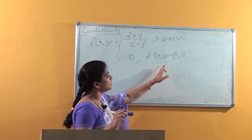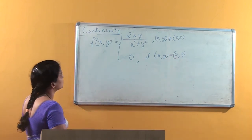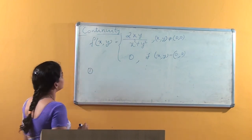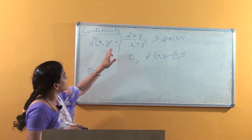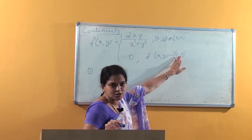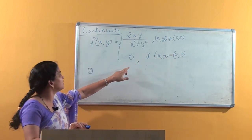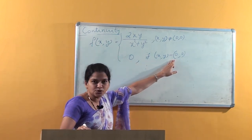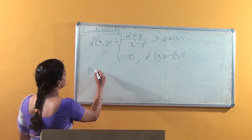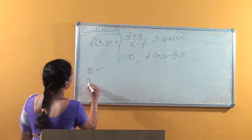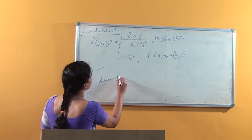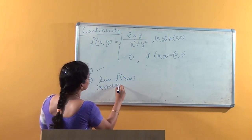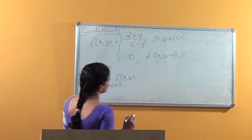Let's check the continuity at the origin. The first condition in the definition is f should be defined at (0, 0). That is true — the first condition is satisfied since f(x, y) is defined at (0, 0). The second condition is that the limit of f(x, y) as (x, y) approaches (0, 0) should exist. Let's check — actually, this limit does not exist.